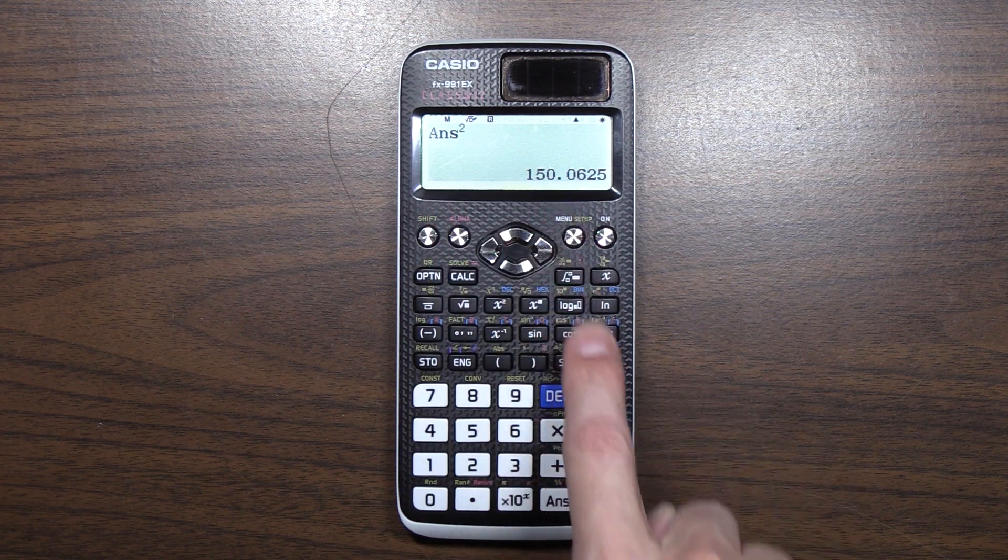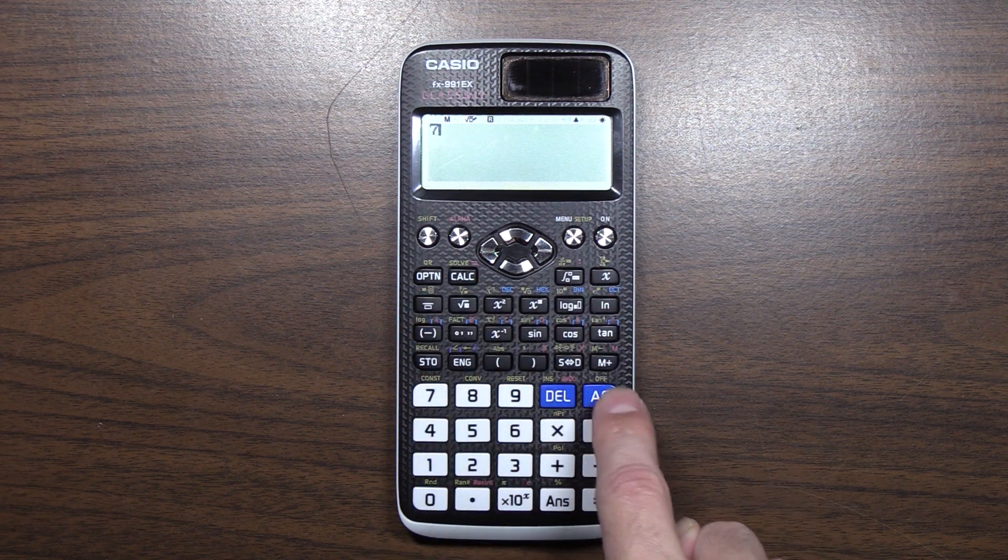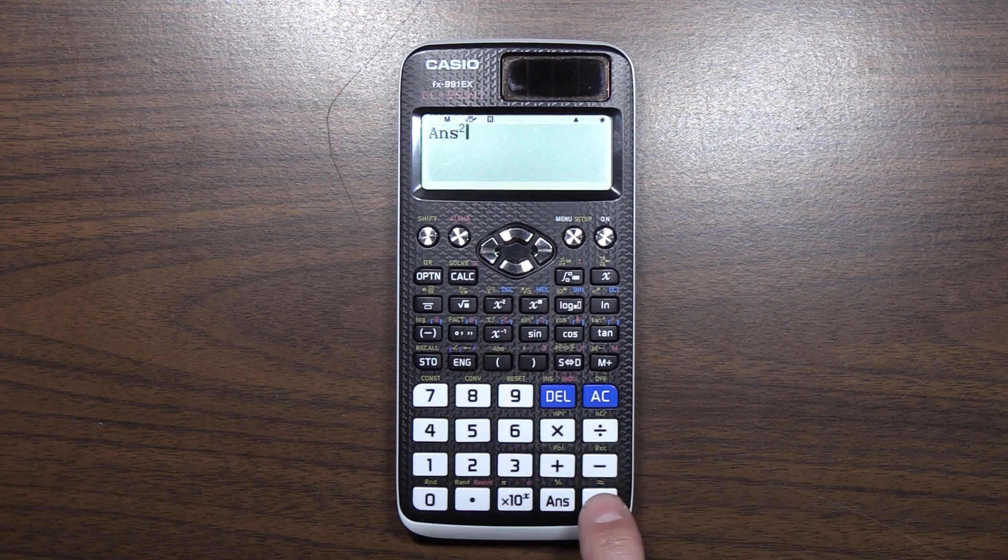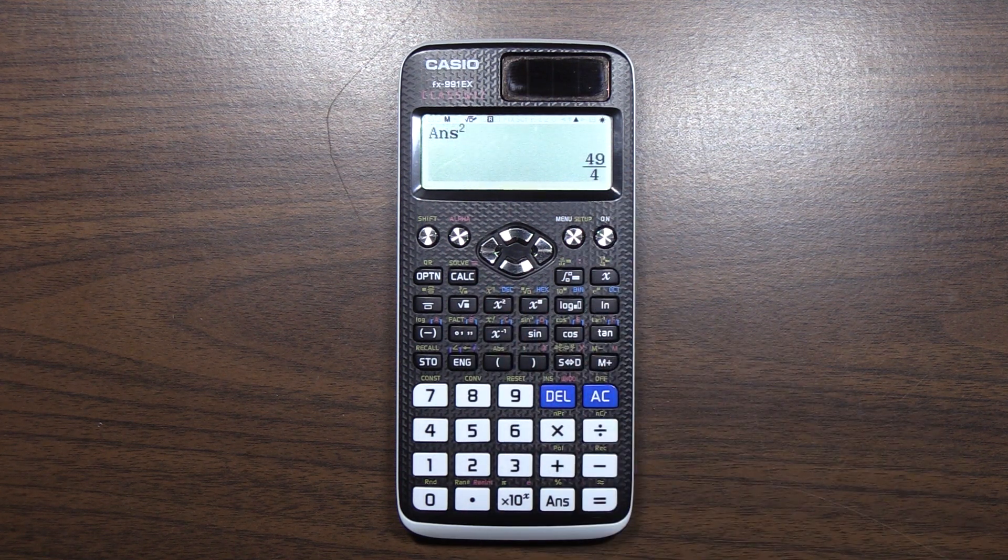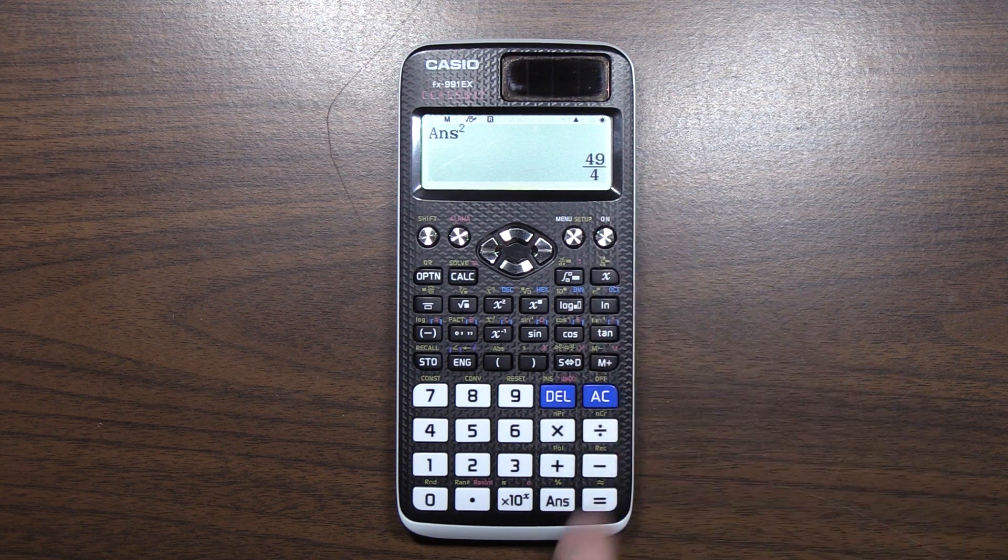So, what's really happening is it's taking the, let's do this again, it's taking what should have been, oops, seven halves squared. It's taking forty nine fourths and it's squaring it again.